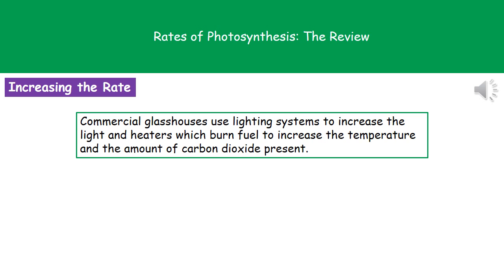If we think about commercial glass houses — and remember, whenever your exam paper says 'glass house', it refers to what you may know as a greenhouse in your garden — these commercial glass houses use lighting systems to make sure they've got a higher amount of light present. In some cases, these lighting systems will be on 24 hours a day, 7 days a week. They will also have heaters which burn fuel, and that has two effects: burning fuel generates carbon dioxide, so the amount of CO₂ inside the glass house will increase, and because the heater generates heat energy, it will also increase the temperature.